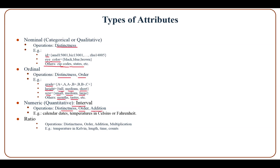With ratio attribute type, all operations can be applied: distinctness, order, addition, and multiplication. Examples are temperatures in Kelvin, length, time, and counts.